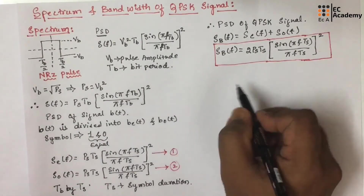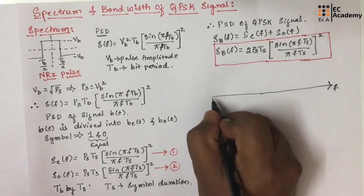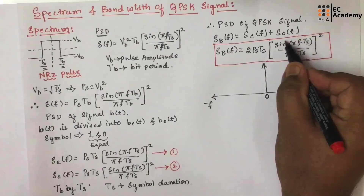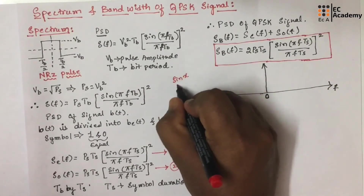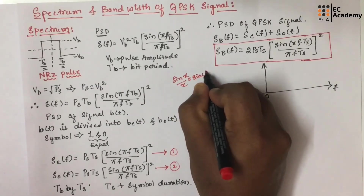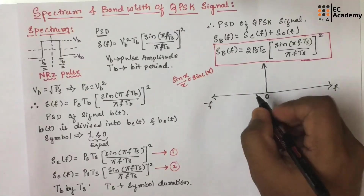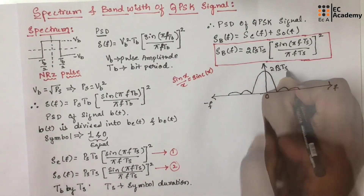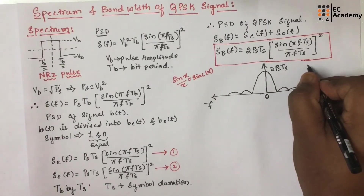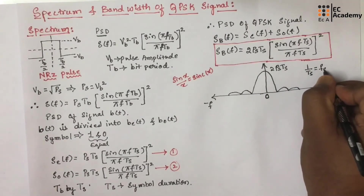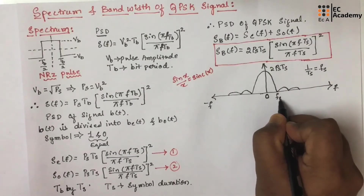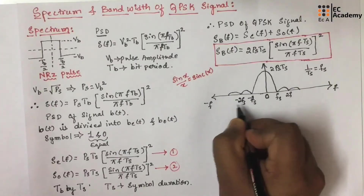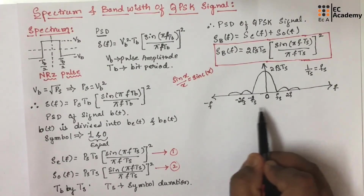Let us plot the power spectral density of QPSK signal. If we observe this equation, it is a sinc function because sin(x)/x can be written as a sinc function. We can plot a sinc waveform with amplitude 2PS·TS, and the frequency spacing is 1/TS, which is Fs. Towards the positive side it will be Fs, 2Fs, and so on. Towards the negative side it is −Fs, −2Fs, and so on. This is the plot of power spectral density of a QPSK signal.